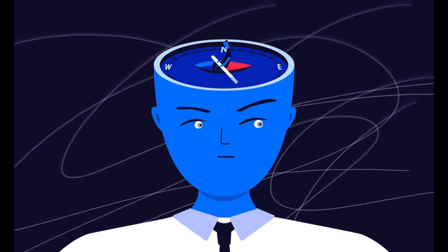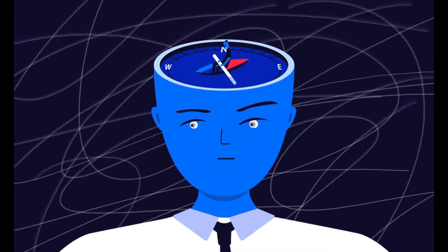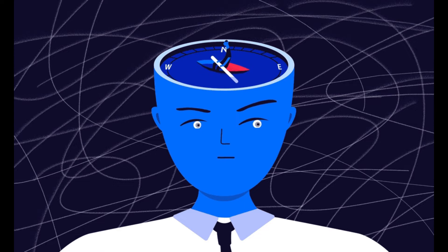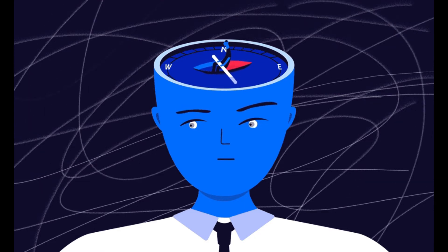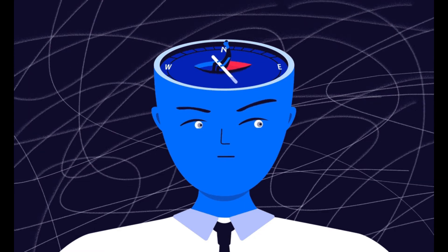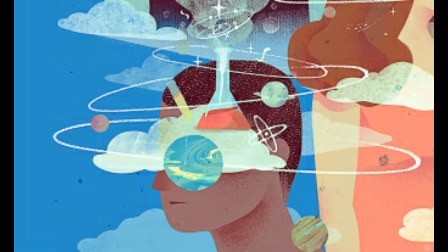Selective attention is the process of focusing on a particular object in the environment for a certain period of time. Attention is a limited resource, so selective attention allows us to tune out unimportant details and focus on what matters.